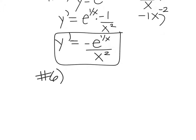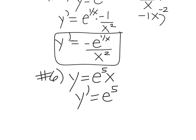Number six: y equals e to the 5th times x. This one is there to mess with your brain. Many people want to do product rule, or take that 5 down and subtract 1 — you're not going to do either. What is e to the 5th? It's a constant. So it's just a constant in front of x, and the derivative is just that constant, e to the 5th.